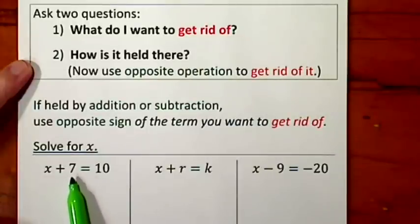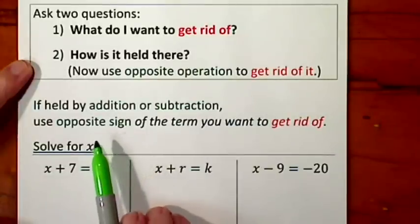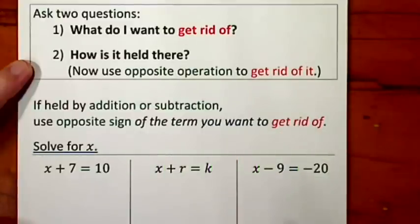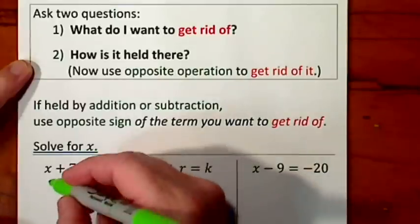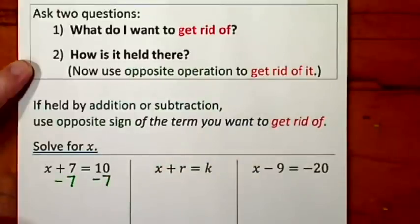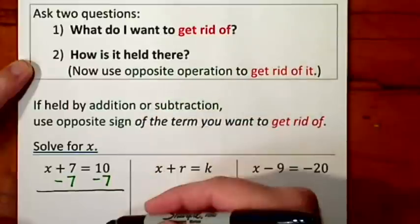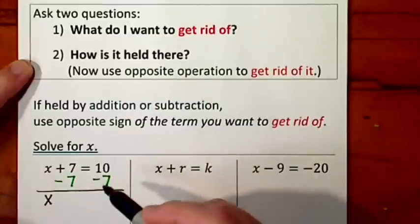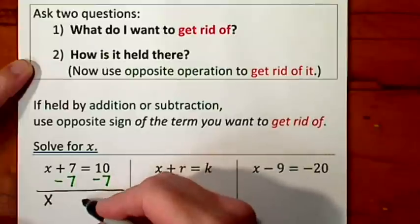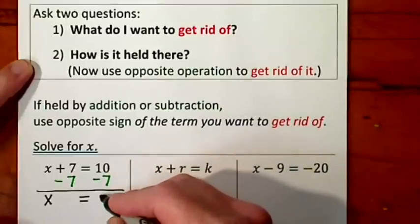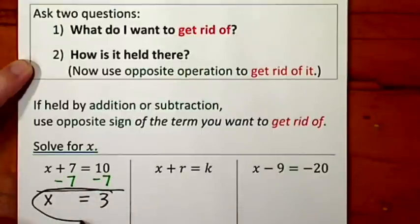When you're trying to get rid of terms that are added or subtracted, the opposite operation involves using the opposite sign of the term that you want to get rid of. So here we have a 7 we want to get rid of — it's held by addition. This is a positive 7, so I'll put negative 7 underneath it, and I go to the other side of the equal sign and put a negative 7. Draw a line and bring down everything. The x comes down, and on the other side, positive 10 minus 7 yields positive 3. That's our solution.